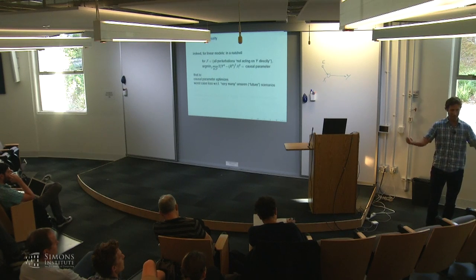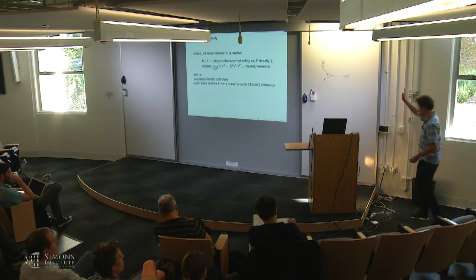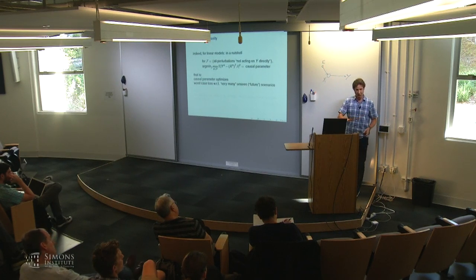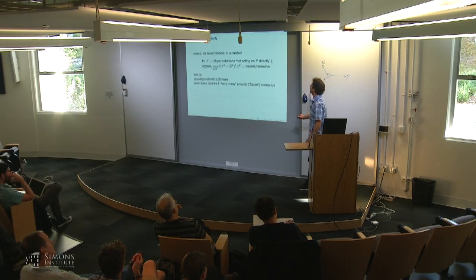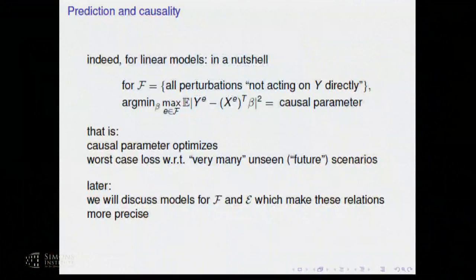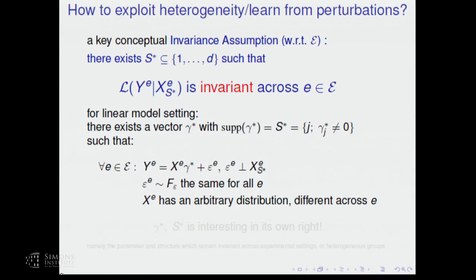Later we will allow E to point to Y, relaxing that assumption. In my economic scenario example I would doubt that holds, but in the genomics example where I actually perturb a gene, it probably does not act directly on the growth rate of the plant. Later we'll discuss other models for script F and make the relations more precise.